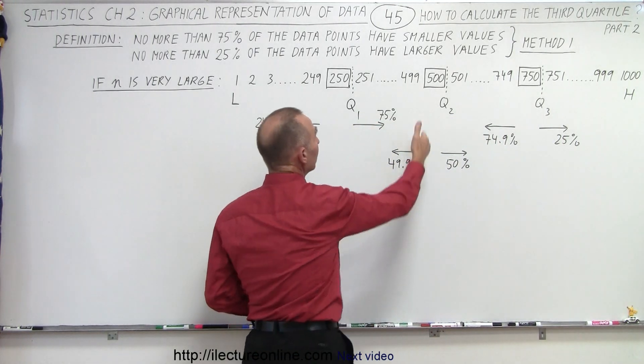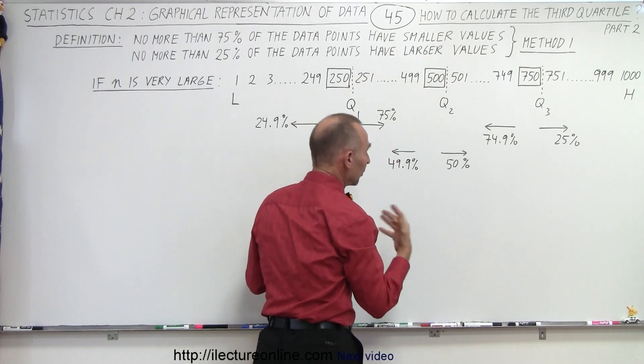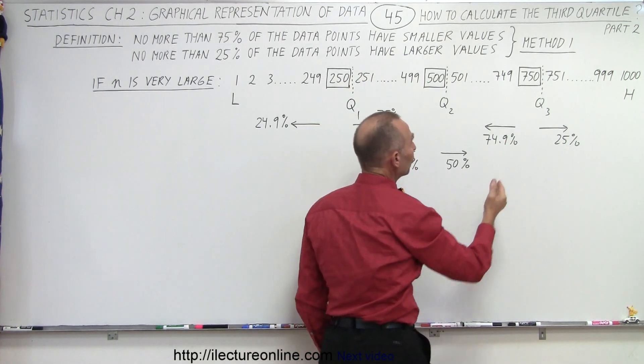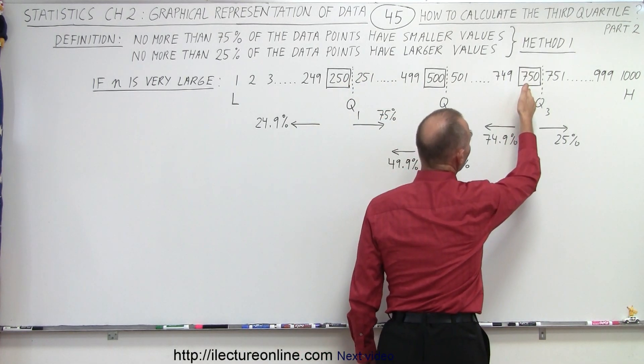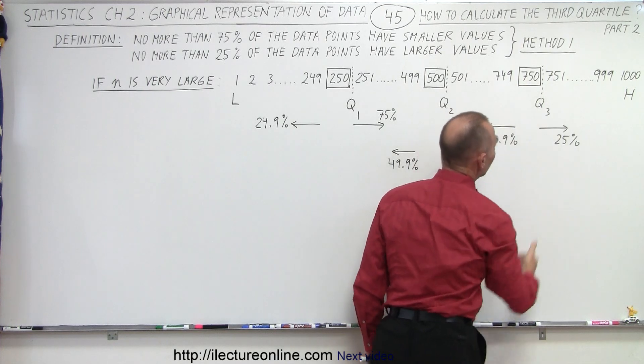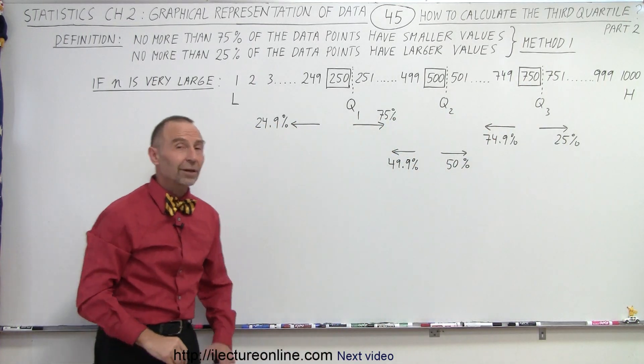It's the same for the second quartile and the first quartile. We have the same idea here. Typically, you just pick the 750th value out of 1,000, and that will represent the third quartile.